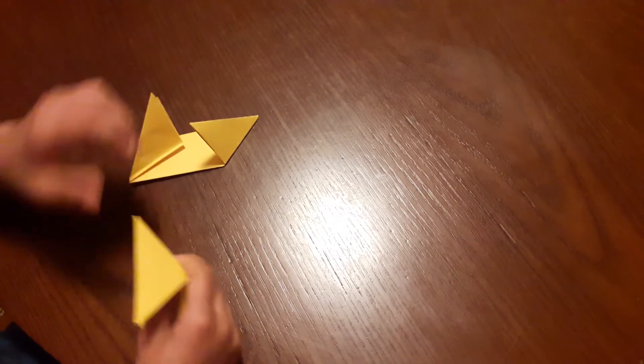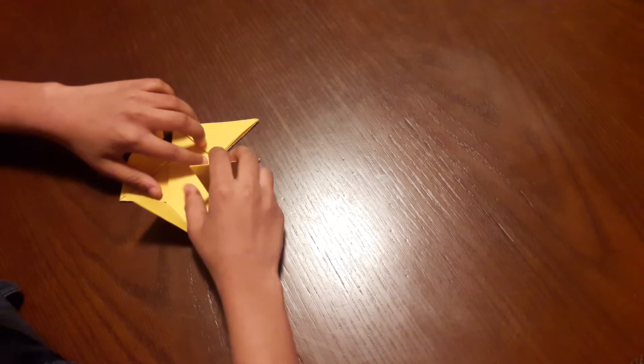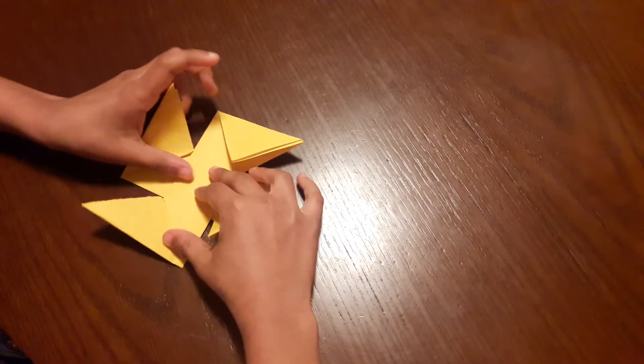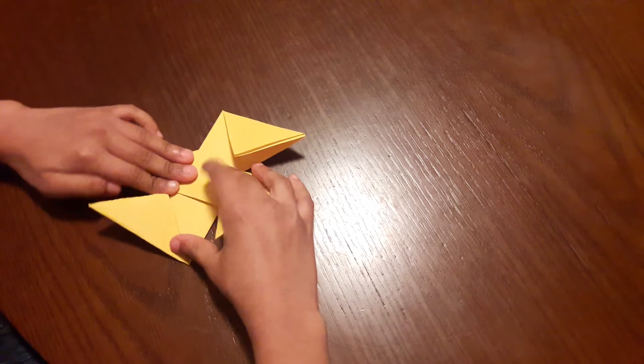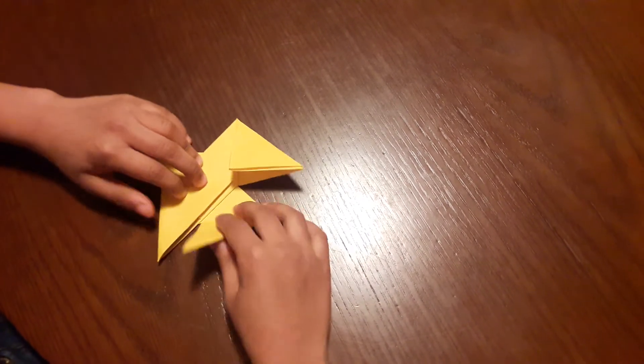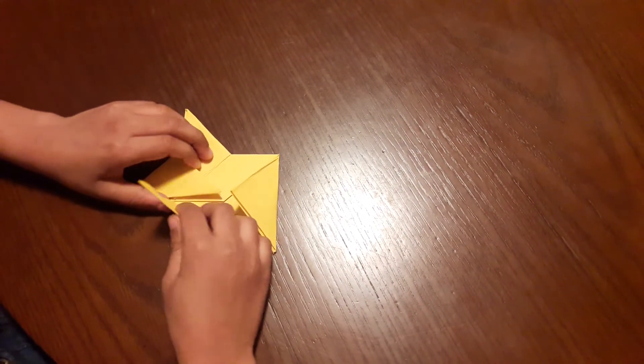Now we're going to do the ninja star part. Keep your pieces together like that. Fold one in, then fold the other. Fold that in, over that, and then fold.